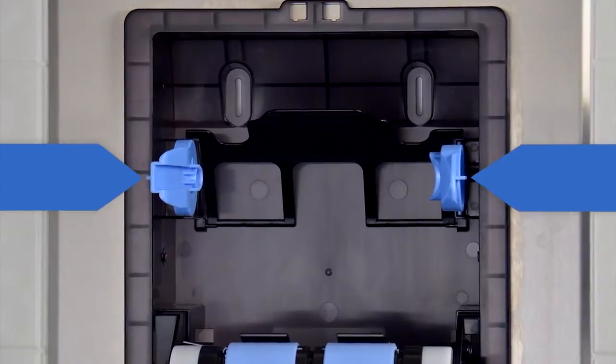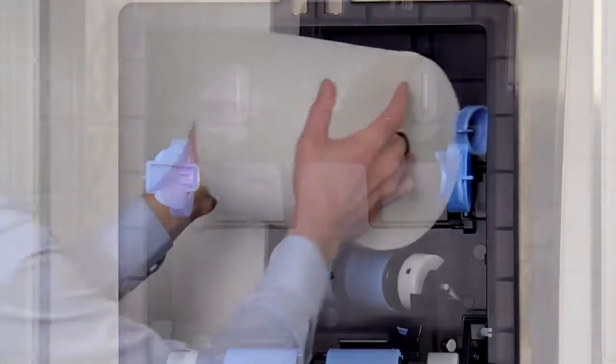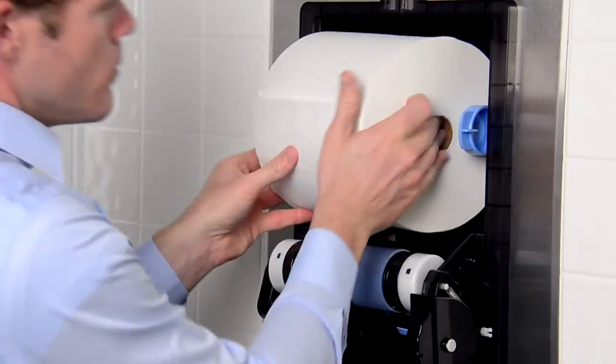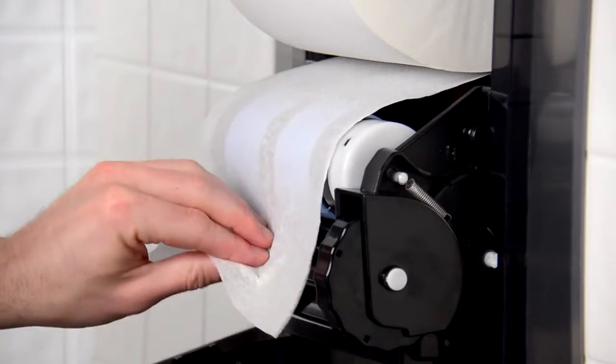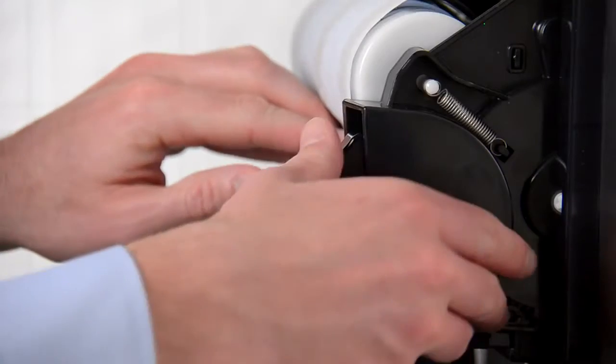Place the new roll onto the roll supports. The paper towel tail should feed under the roll and pass over the large drum. Tuck the tail between the large drum and the small plastic spindle.